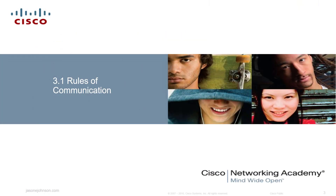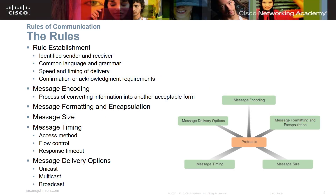Section 3.1 covers Rules of Communication. Just like driving on a highway, we need rules to communicate. For example, if I don't speak French and someone else doesn't speak English, but we both speak Spanish, we establish a rule that we'll communicate in Spanish. That's an example of establishing rules in the networking world.